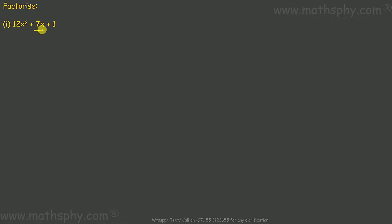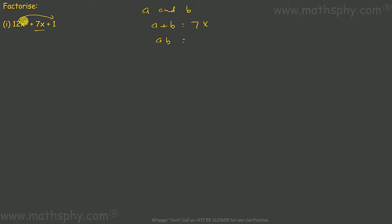When we split the middle term, there are two things to keep in mind. If I split the middle term into two parts a and b, then a plus b should be equal to 7x, and a times b should be equal to the product of the first and last terms — that is, 12x squared. This rule is applicable to all the other polynomials we'll work through as well.